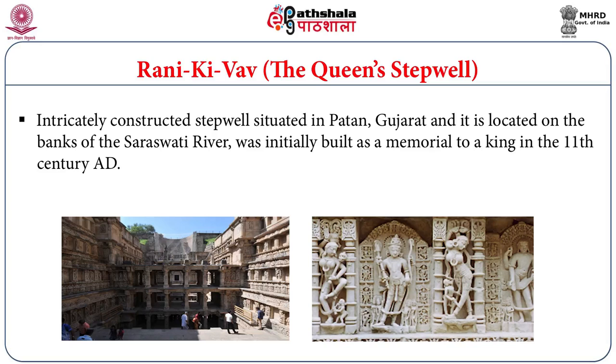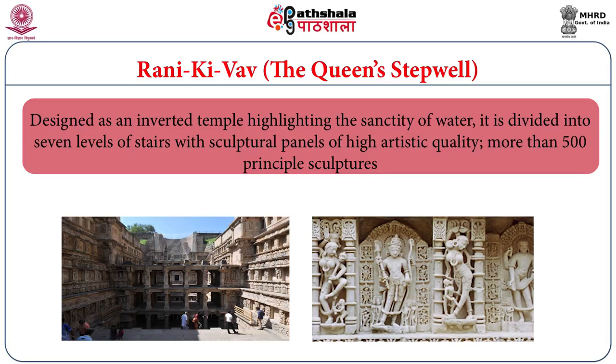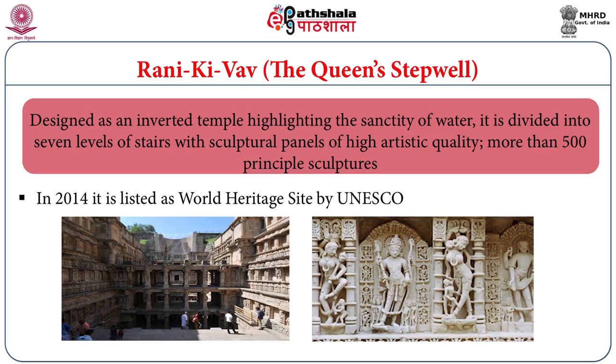Rani ki Vav is located in Patan in the state of Gujarat. It has unique architectural value, reflecting different gods and goddesses in the form of sculpture. This particular site was recognized as a World Heritage Site in the year 2014 by UNESCO. There are many places to be excavated and explored for archaeological significance, and there is more scope and potential for conservation and archaeological excavations at this site.